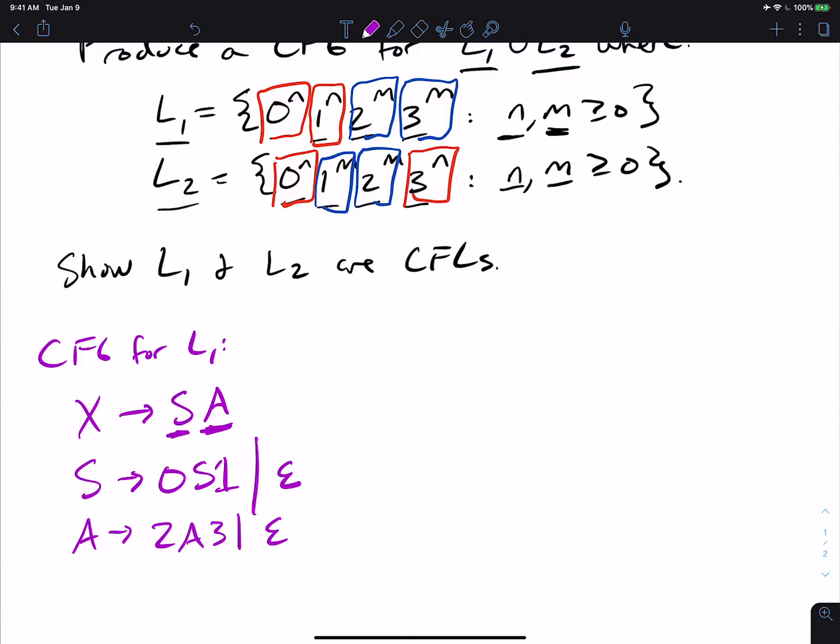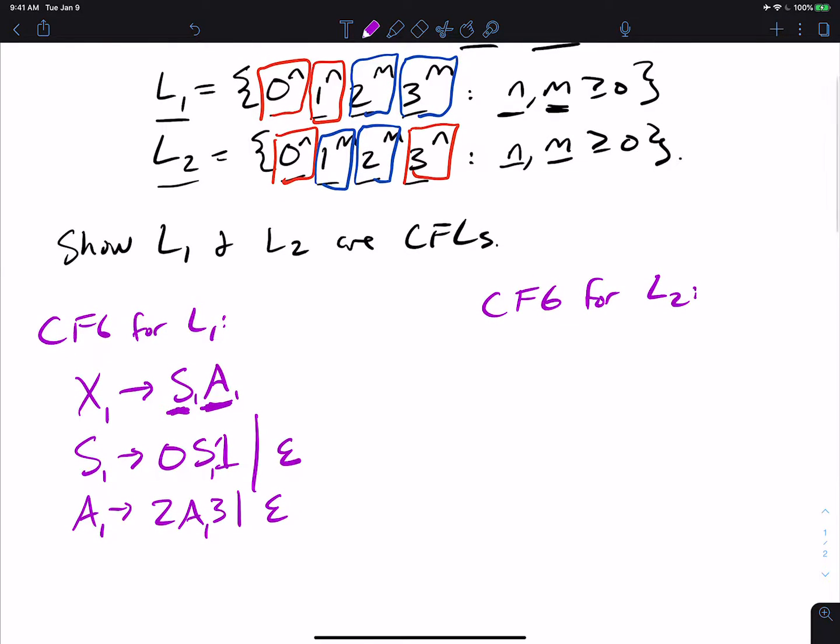And notice, because it's a context-free grammar, it doesn't matter what the number of 0s and 1s are compared to the number of 2s and 3s, because they're corresponding to two different occurrences of variables. So then for that reason, let's make a CFG for L2. We can do the same idea. I'm going to change the variable names here. So let's just call this s1 a1, so that we know which one's which. And I'm going to call the starting variable x1.